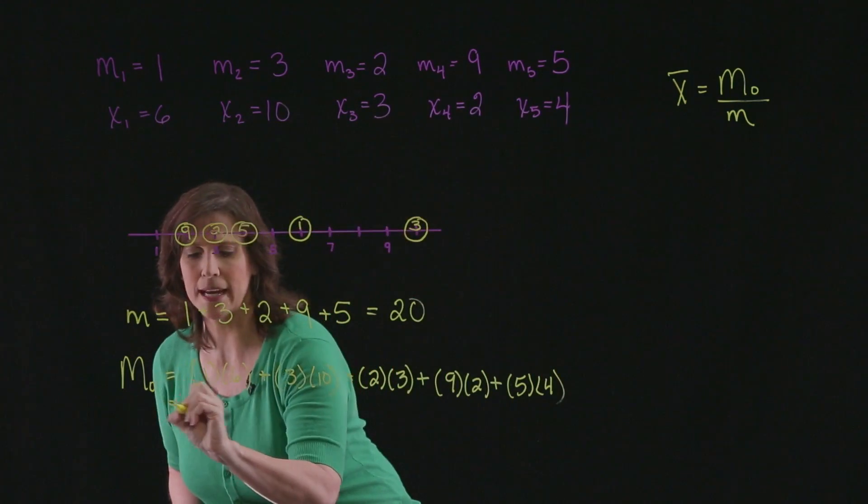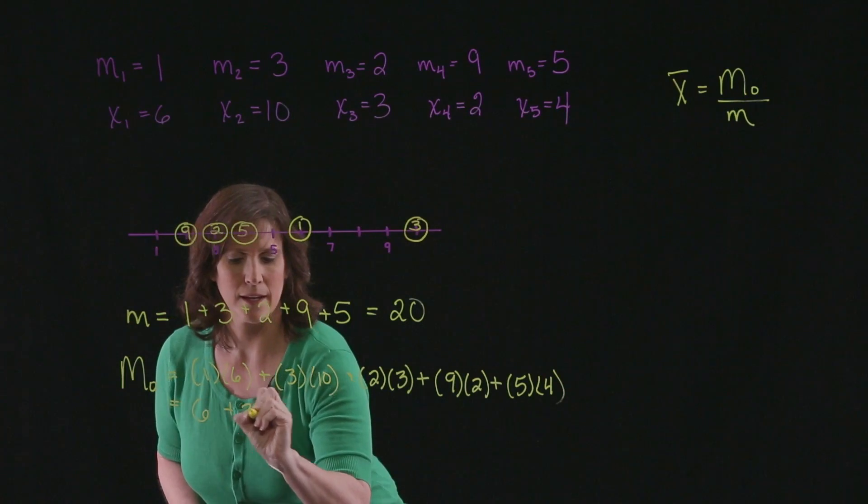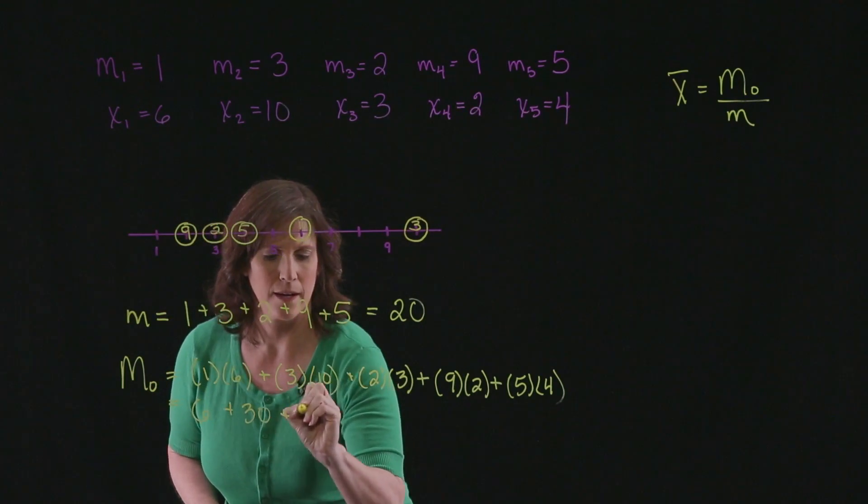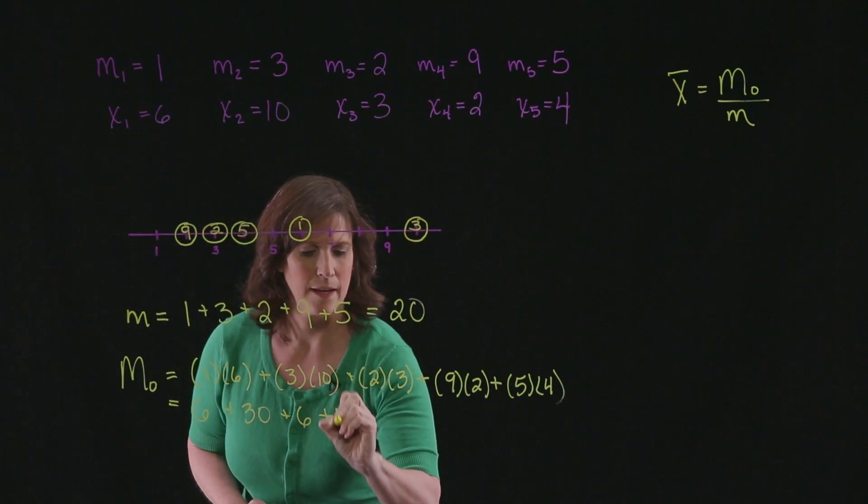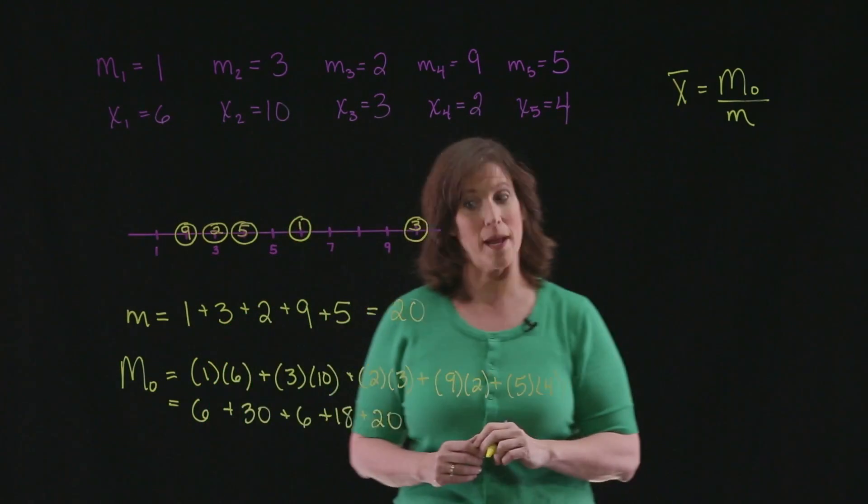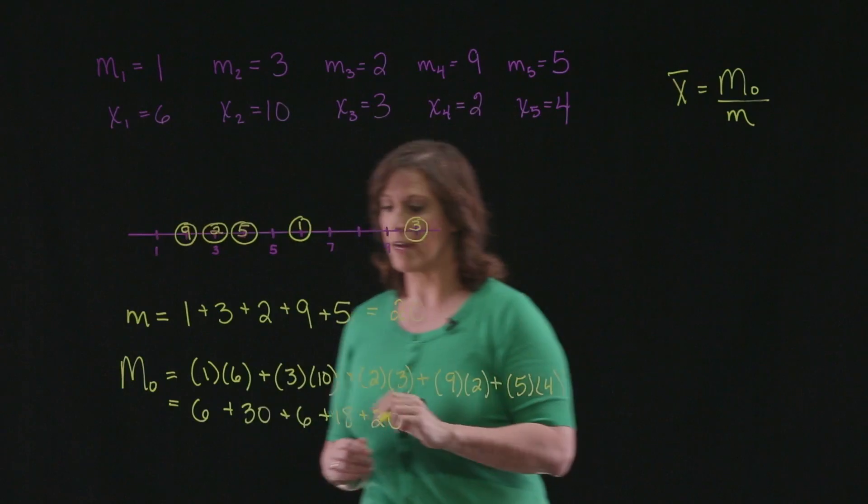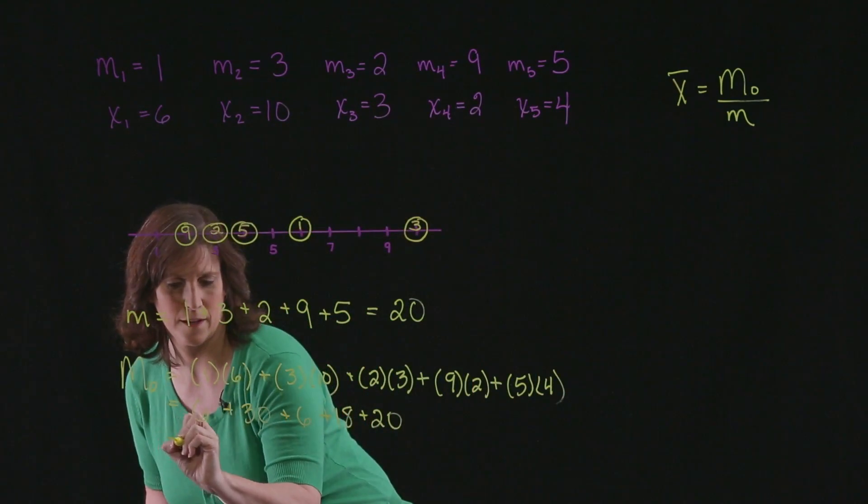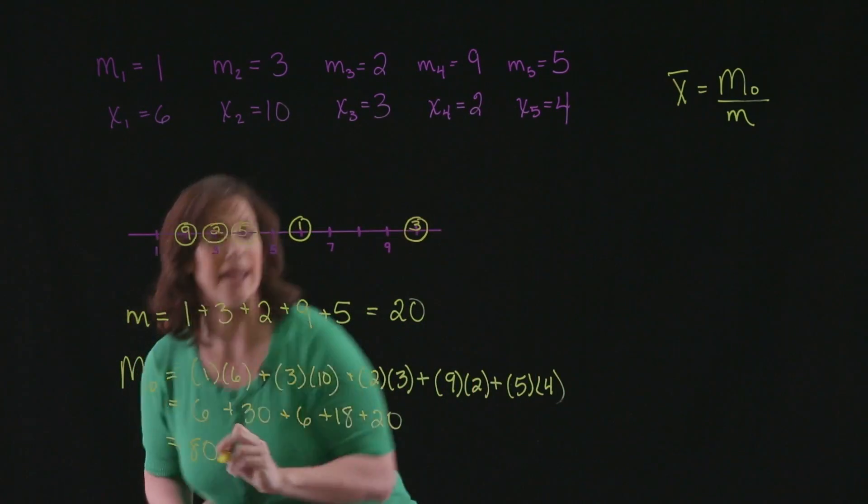With a little arithmetic, I'm going to get 6 plus 30 plus 6 plus 18 plus 20, which will give me a total of 80.